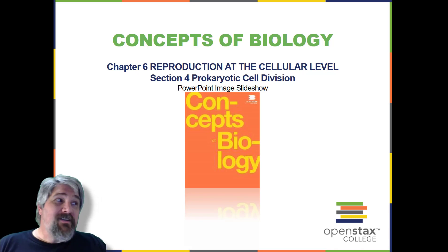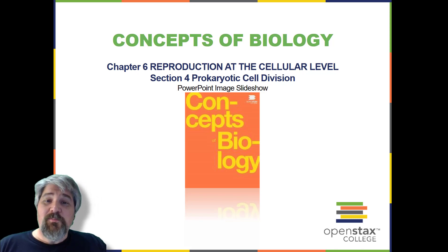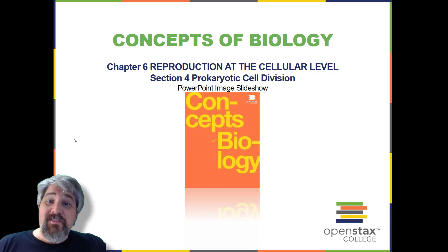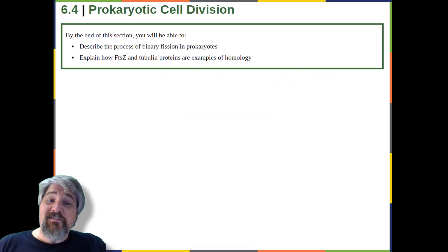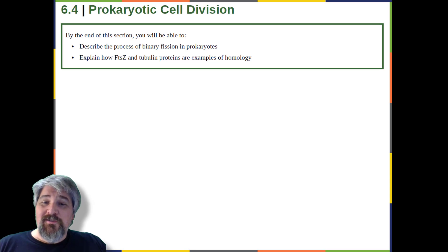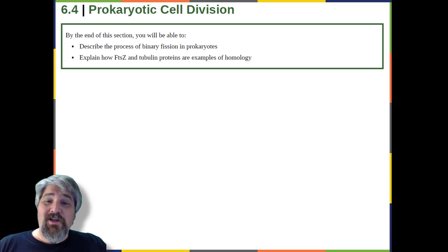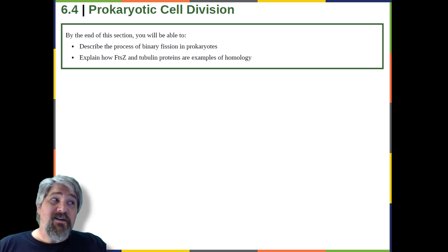Welcome back to Chapter 6. This is Section 4, Prokaryotic Cell Division. By the end of this section, you will be able to describe the process of binary fission in prokaryotes, and explain how FTSZ and tubulin proteins are examples of homology.